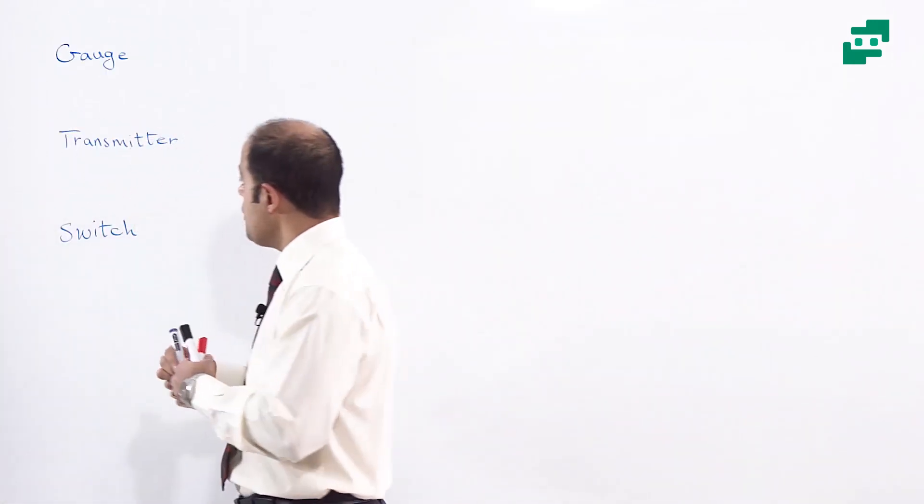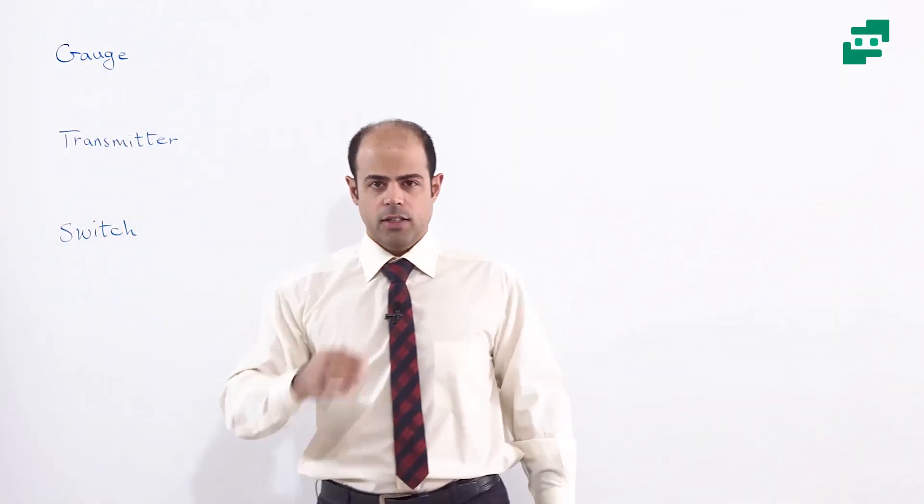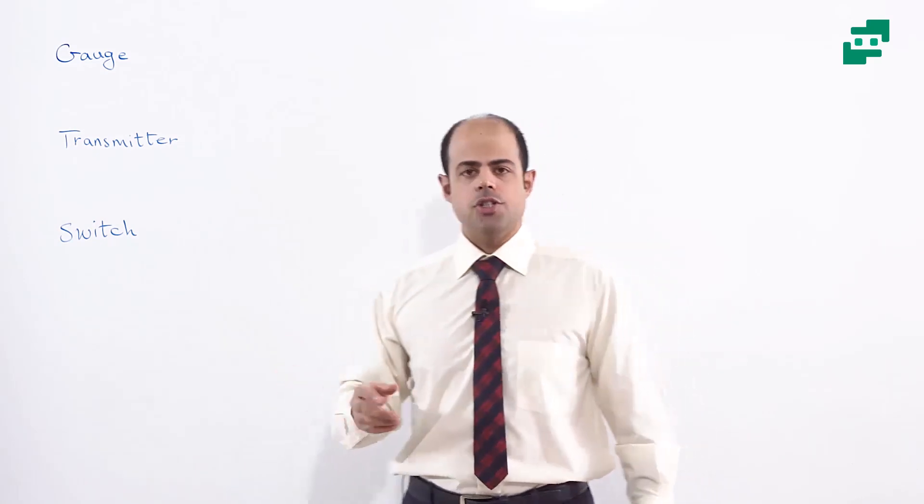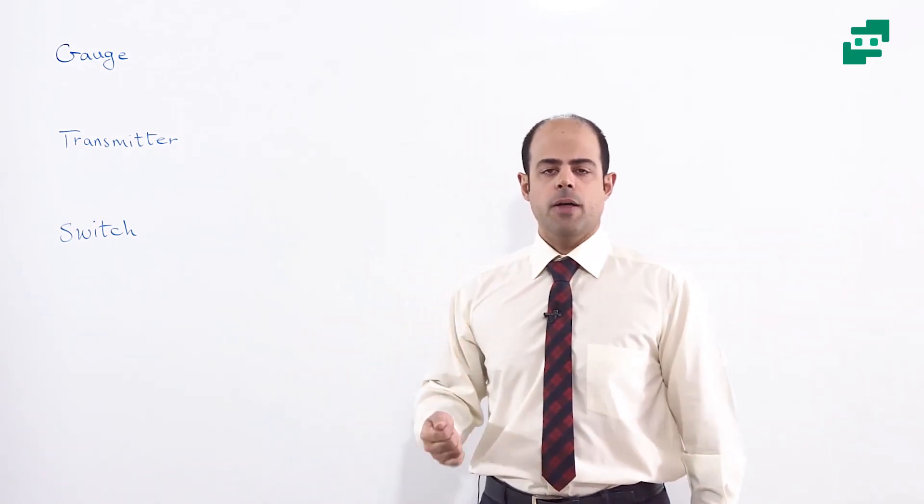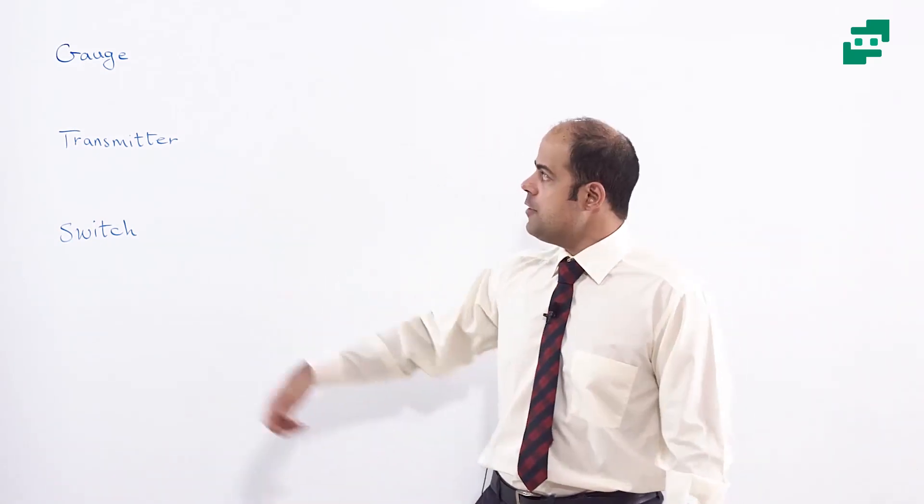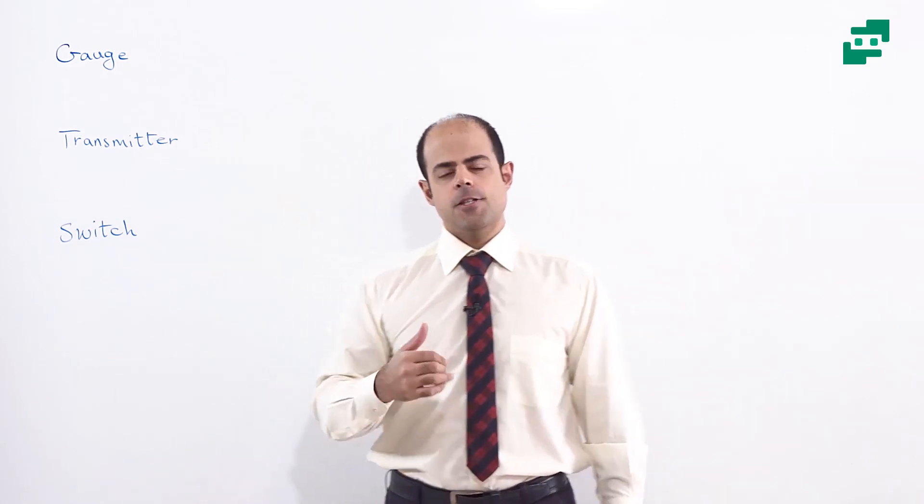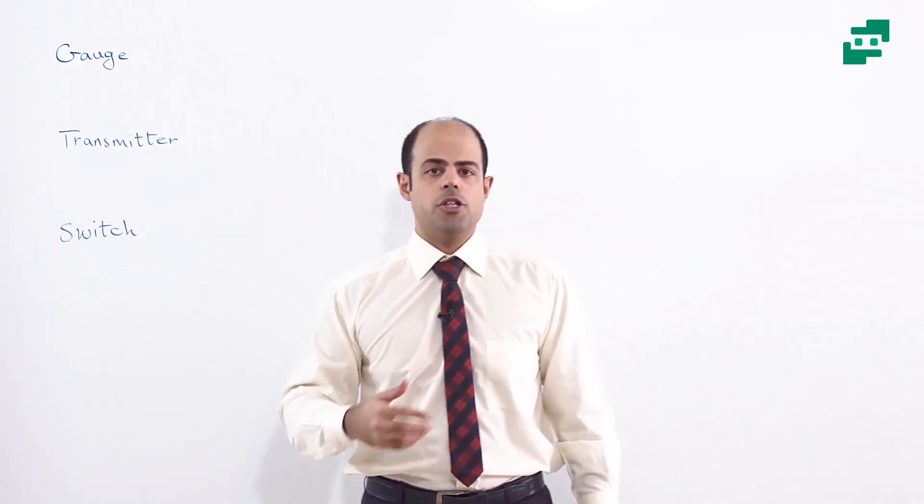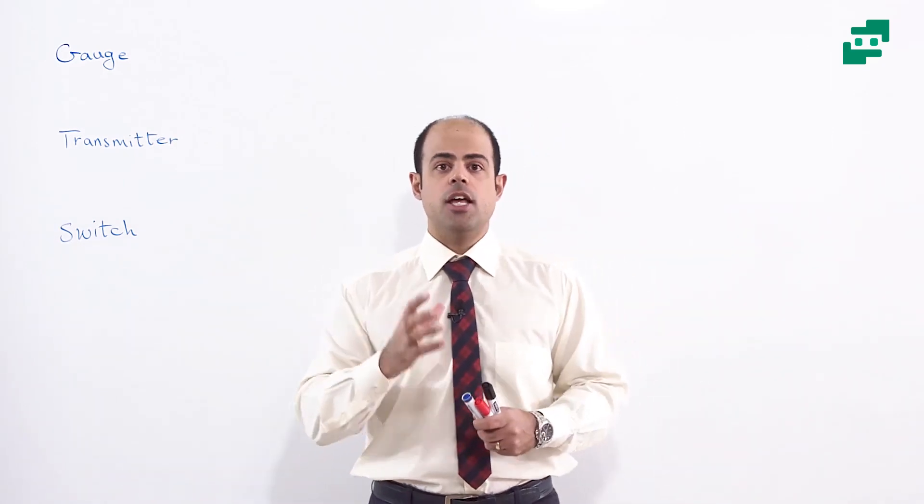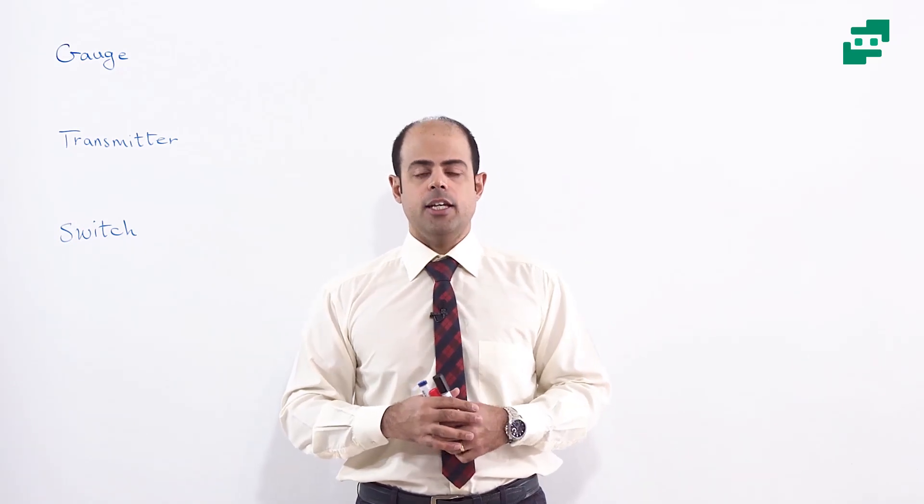Now I'm going to elaborate on all these things and explain how we can use them based on their performance and function. The first one is gauges. It's a type of tool or instrument that just measures something mechanically.